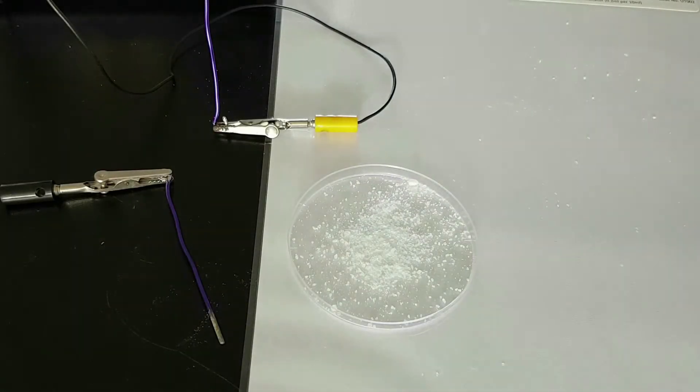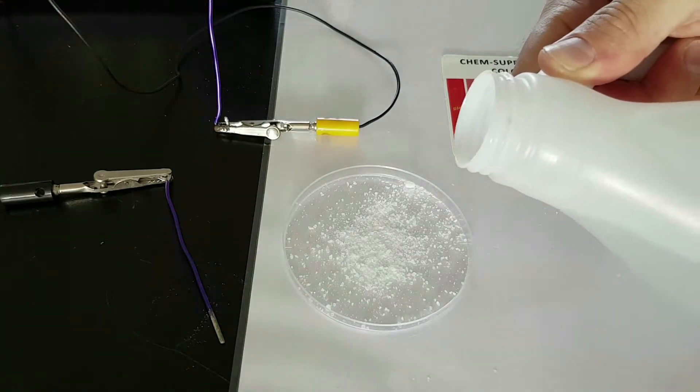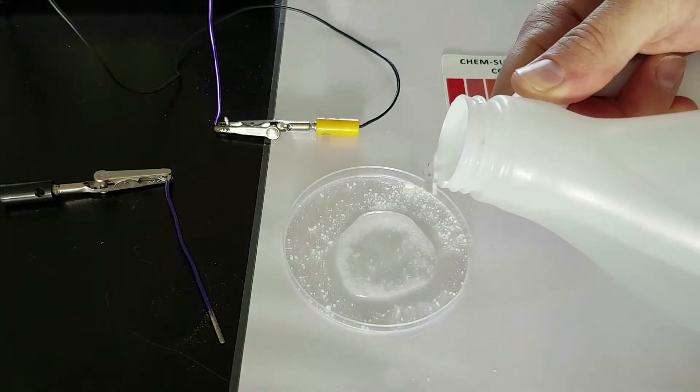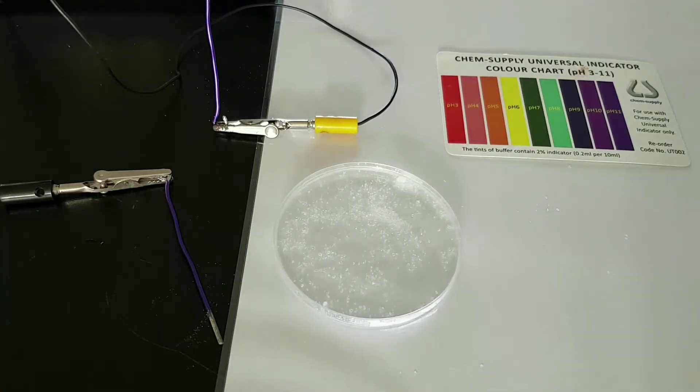When setting up to start this demonstration, place some salt into a petri dish, place your universal indicator chart to the side of it so you can see what's going on, and then fill it with water to dissolve the salt.